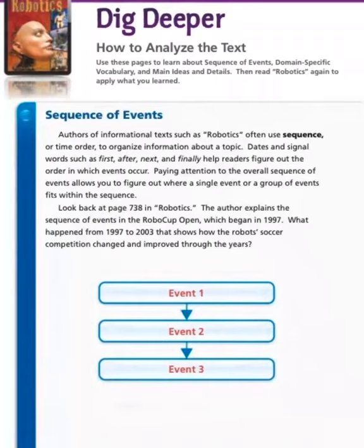Sequence of events: authors of informational text, such as 'Robotics,' often use sequence or time order to organize information about a topic. Dates and signal words such as 'first,' 'after,' 'next,' and 'finally' help readers figure out the order in which events occur. Paying attention to the overall sequence of events allows you to figure out where a single event or a group of events fits within the sequence.